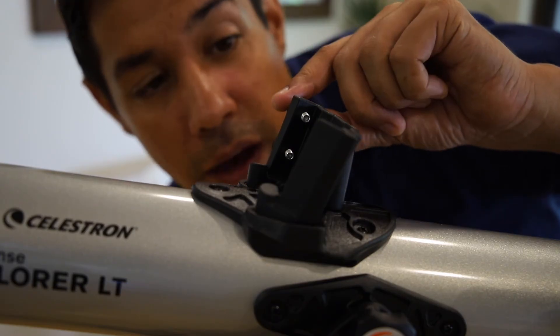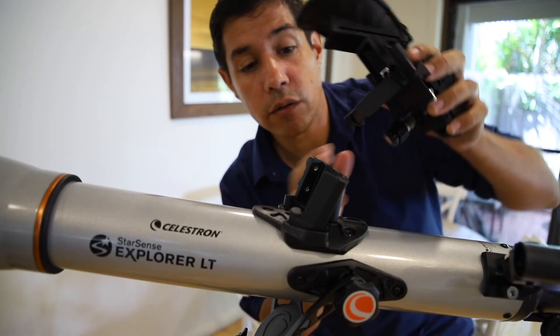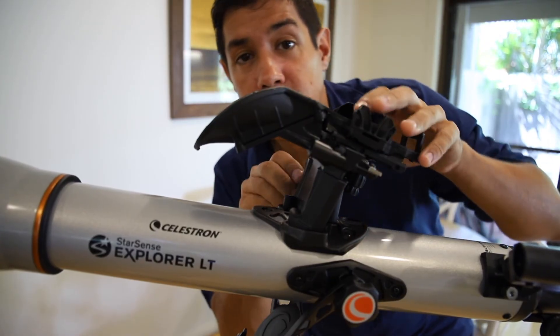Loosen these screws here for the smartphone cradle. Now you should be able to lower the smartphone cradle straight down and tighten.